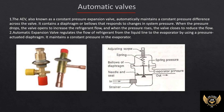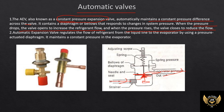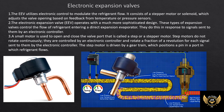Automatic valves — also called constant pressure expansion valves — operate based on pressure variation. When there is a pressure difference, the valve opens or closes automatically to maintain constant pressure in the evaporator. High pressure and low pressure variations are managed by this valve across the compressor, condenser, and expansion valve stages.